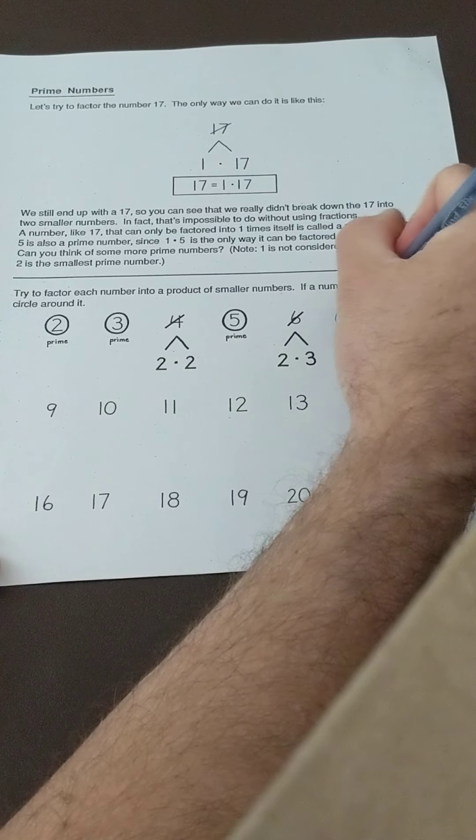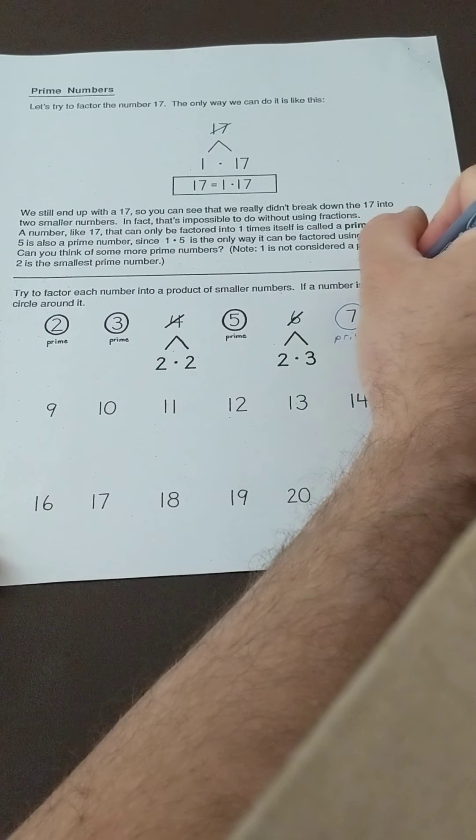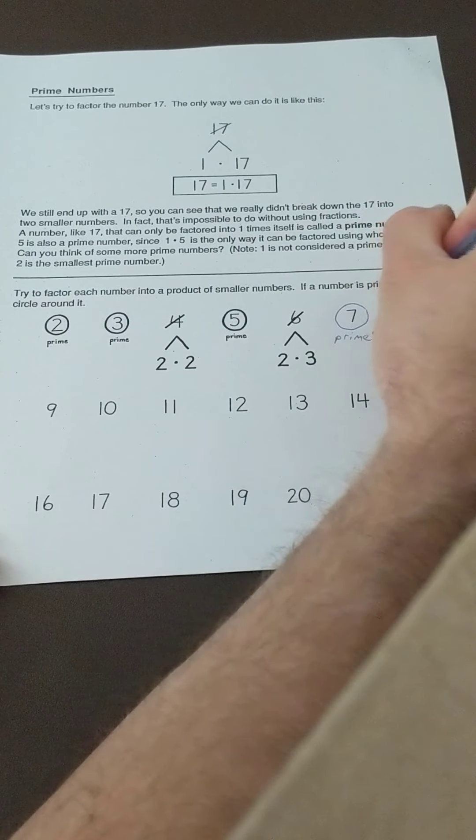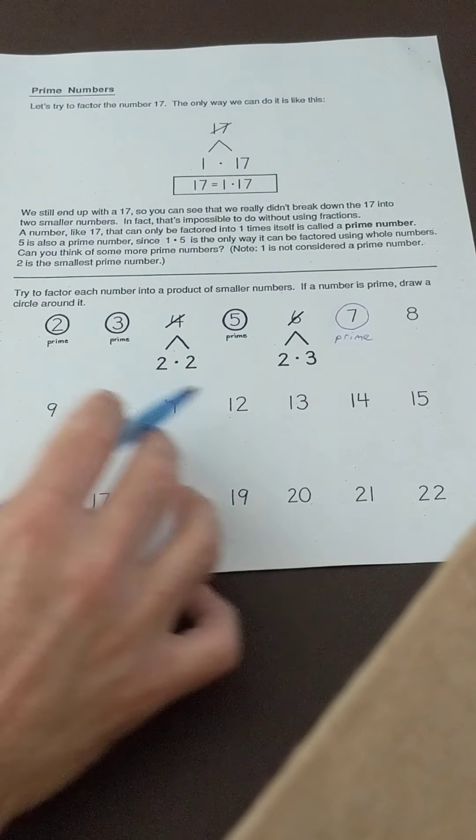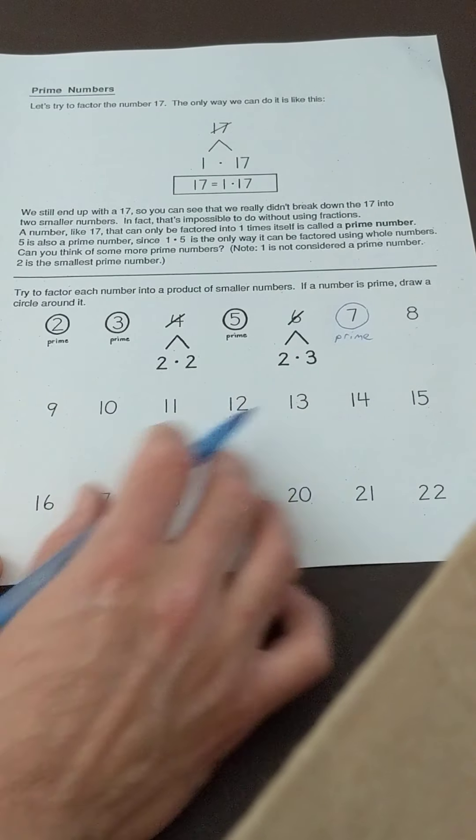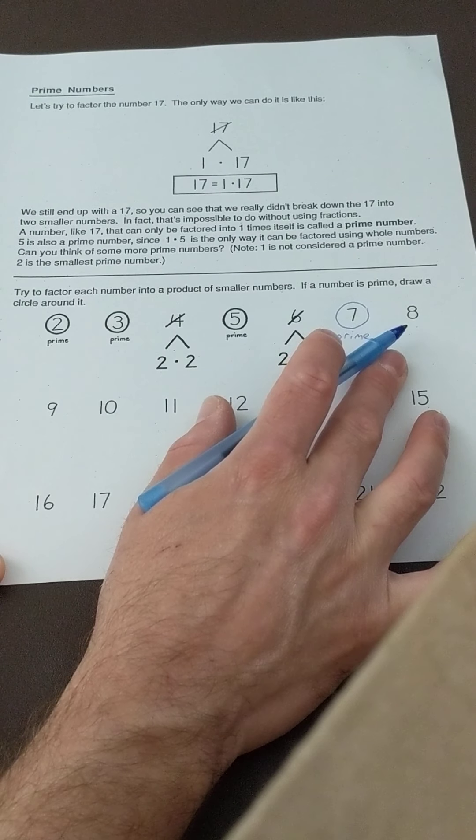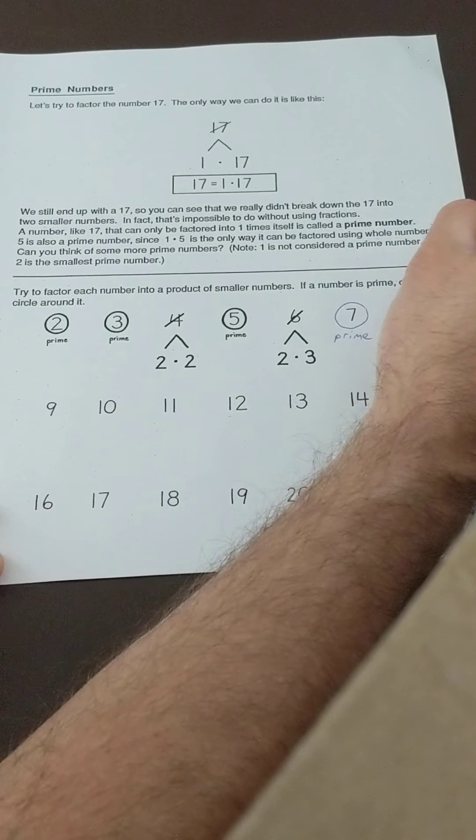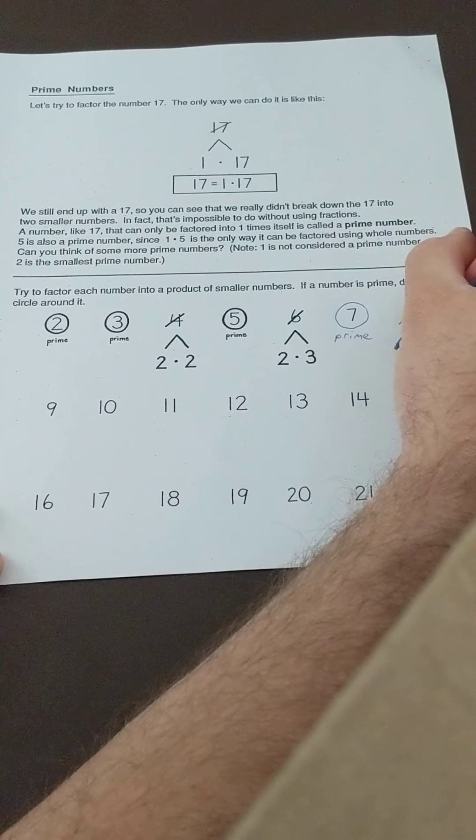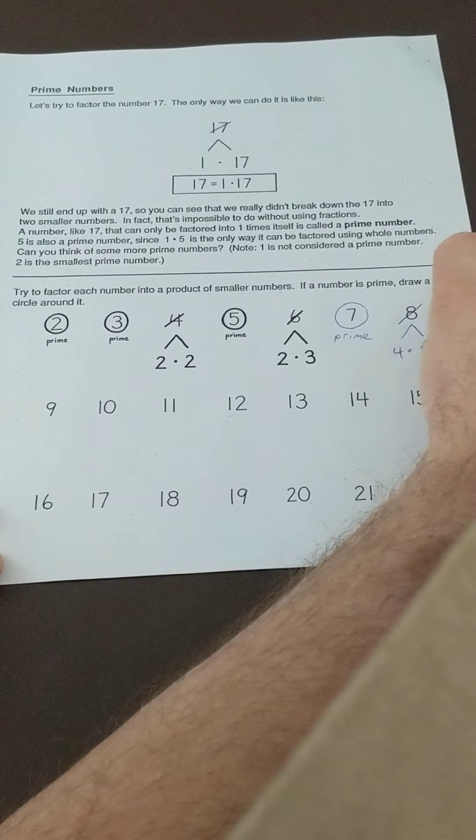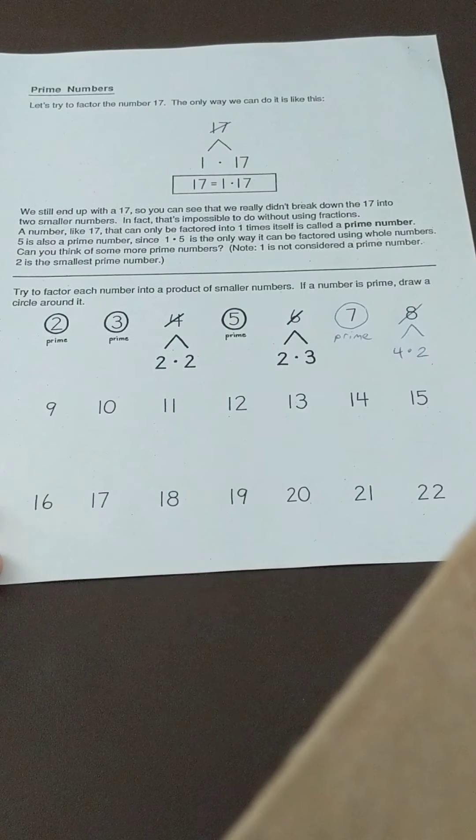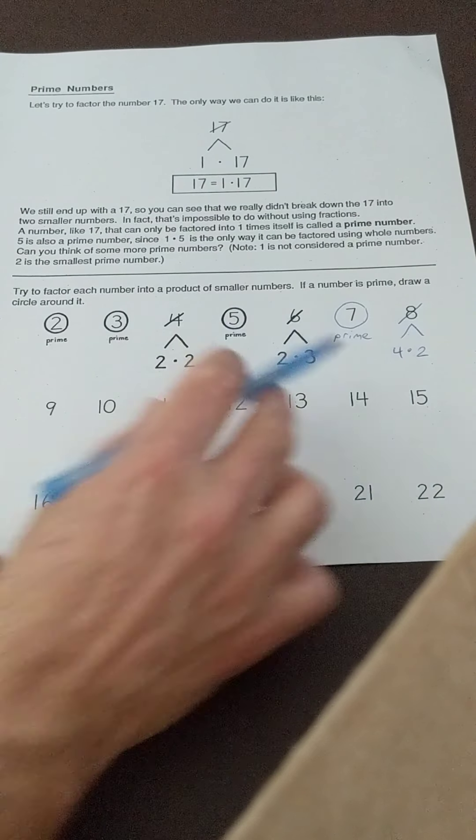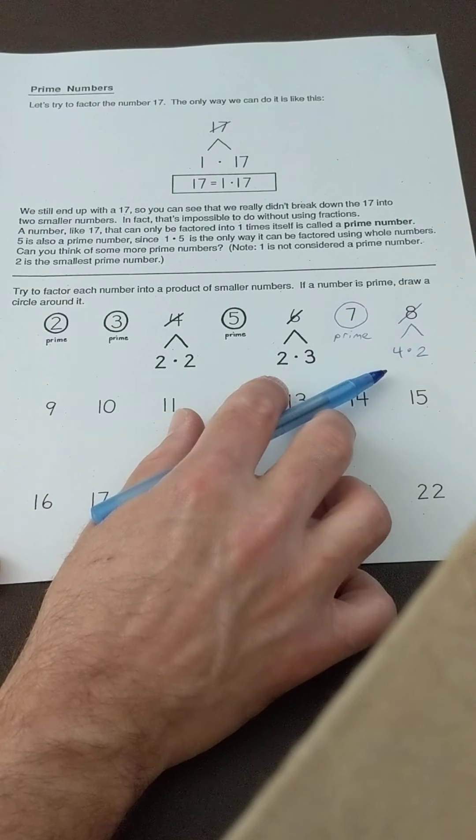The next one, eight, is not prime, so we're going to break it down into a factor tree. So eight can be made with four times two, and that's all I want you to do. We know that it's not prime because it can be made with four times two.